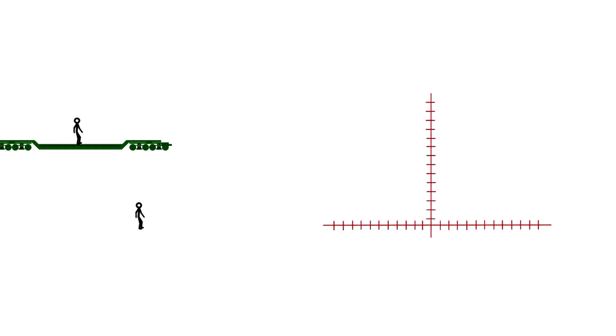Only this time, we'll map the events to our space-time graph. The world line for the person standing on the ground is shown in purple.